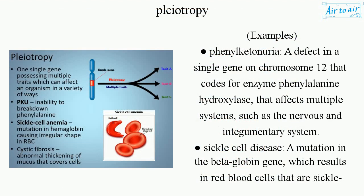Examples: Phenylketonuria — a defect in a single gene on chromosome 12 that codes for the enzyme phenylalanine hydroxylase — affects multiple systems, such as the nervous and integumentary system.